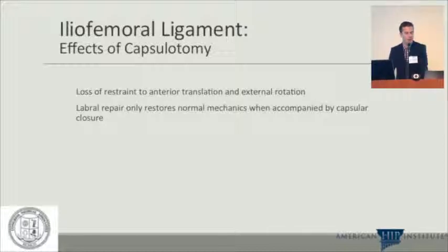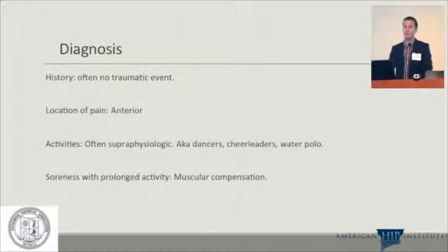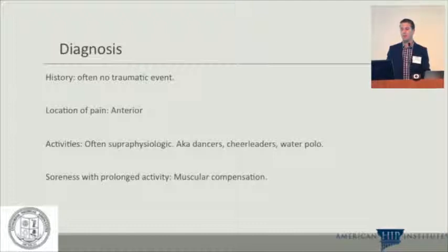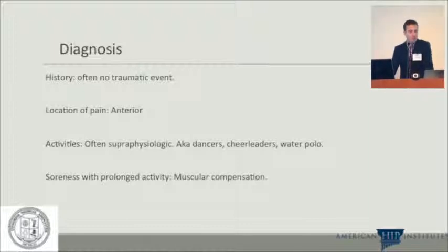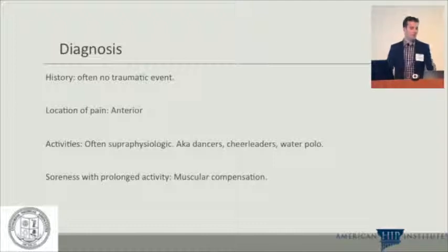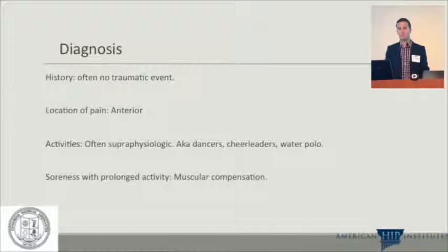For diagnosis of hip instability: it's often not a traumatic event, unlike the shoulder. Pain is typically anterior but can have a broad distribution, probably from muscular compensation. Their activities are generally super-physiologic — dancers, ballerinas, cheerleaders, water polo players — and they get soreness with activity. Otherwise it's a similar presentation to FAI, which makes it more difficult to distinguish.